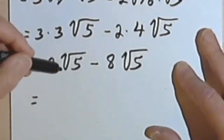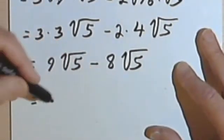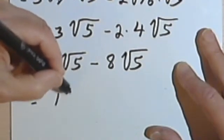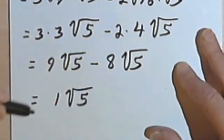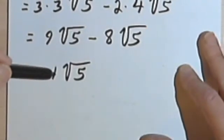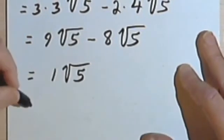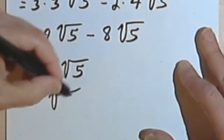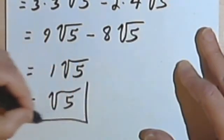This was a subtraction problem, so I'll subtract: 9 minus 8. I'll get 1 times the square root of 5. And since I've got something multiplied by 1, I really don't have to write that 1. So my answer is simply the square root of 5.